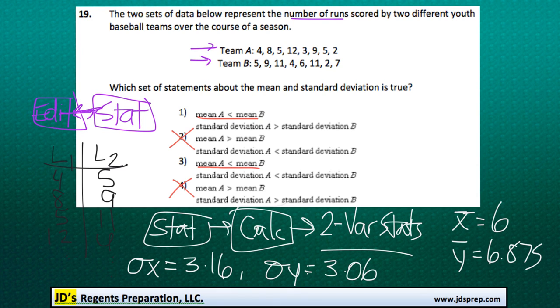So the standard deviation of A is greater than the standard deviation of B, so it's not number 3 and it is option number 1.